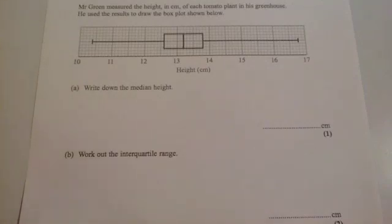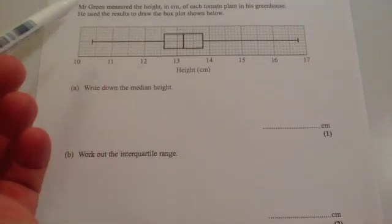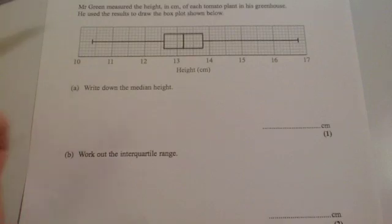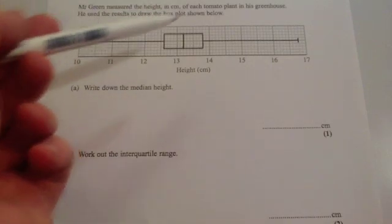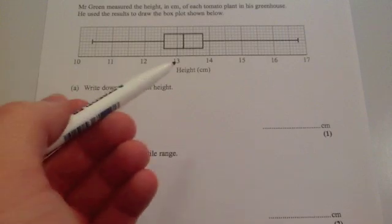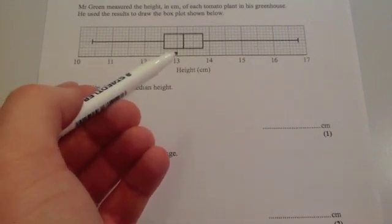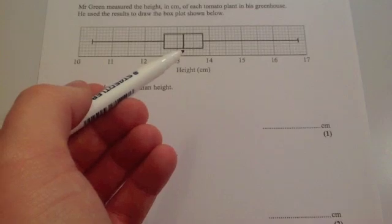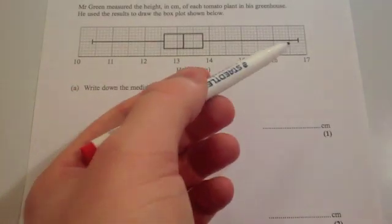We're now going to interpret a box plot. Here we've got a box plot for Mr. Green who measured the height of each tomato in his greenhouse. You've got here the lowest value, the lower quartile, the median, the upper quartile, and the highest value there.